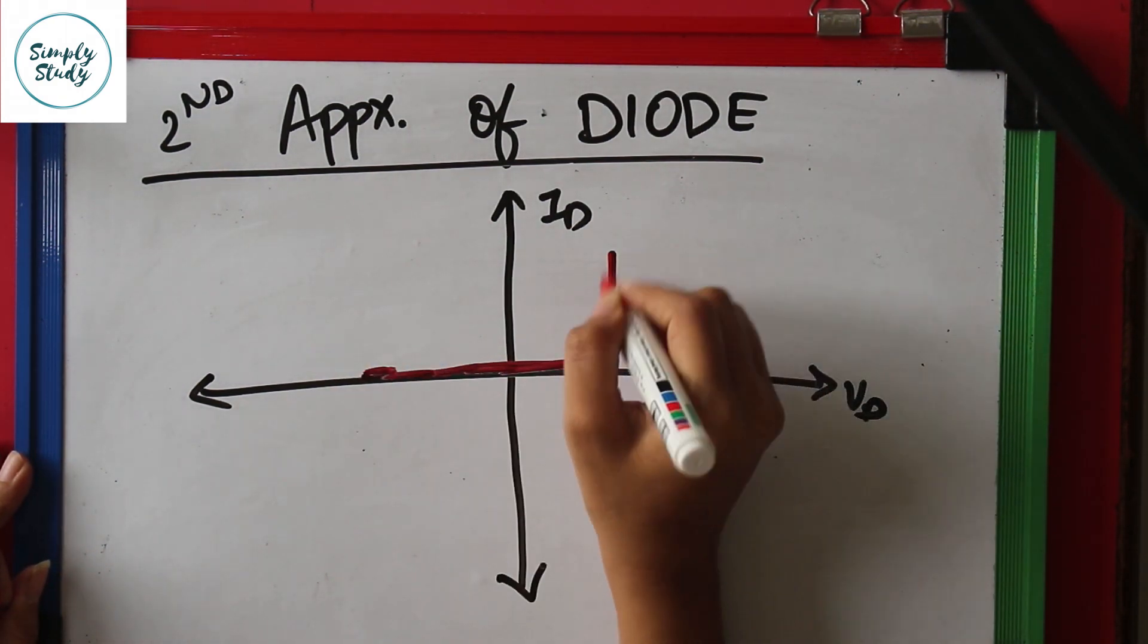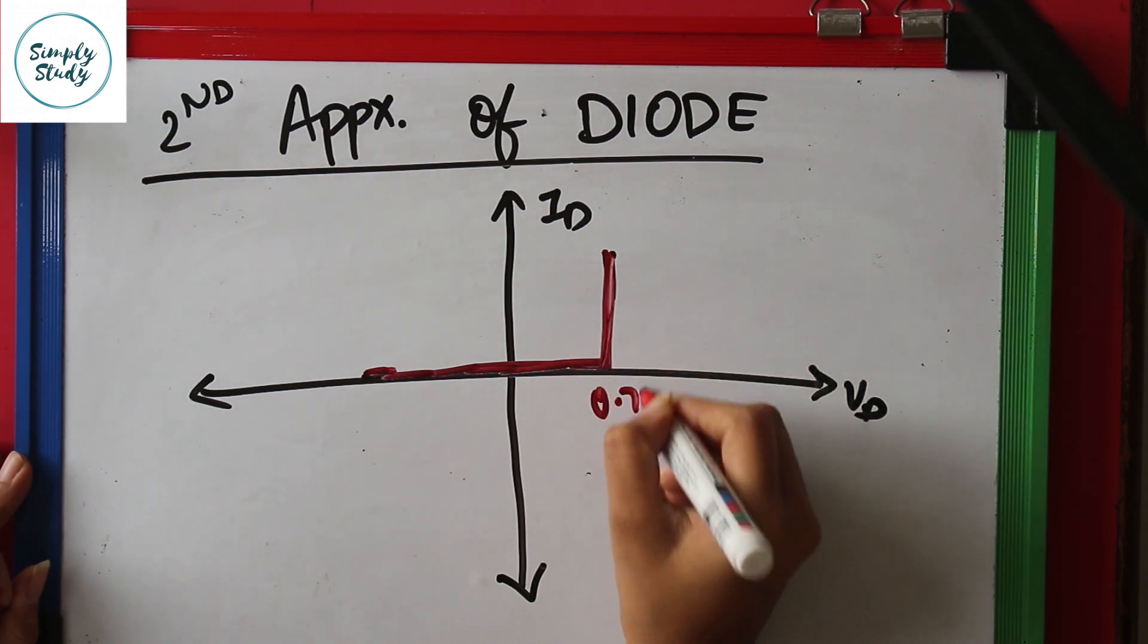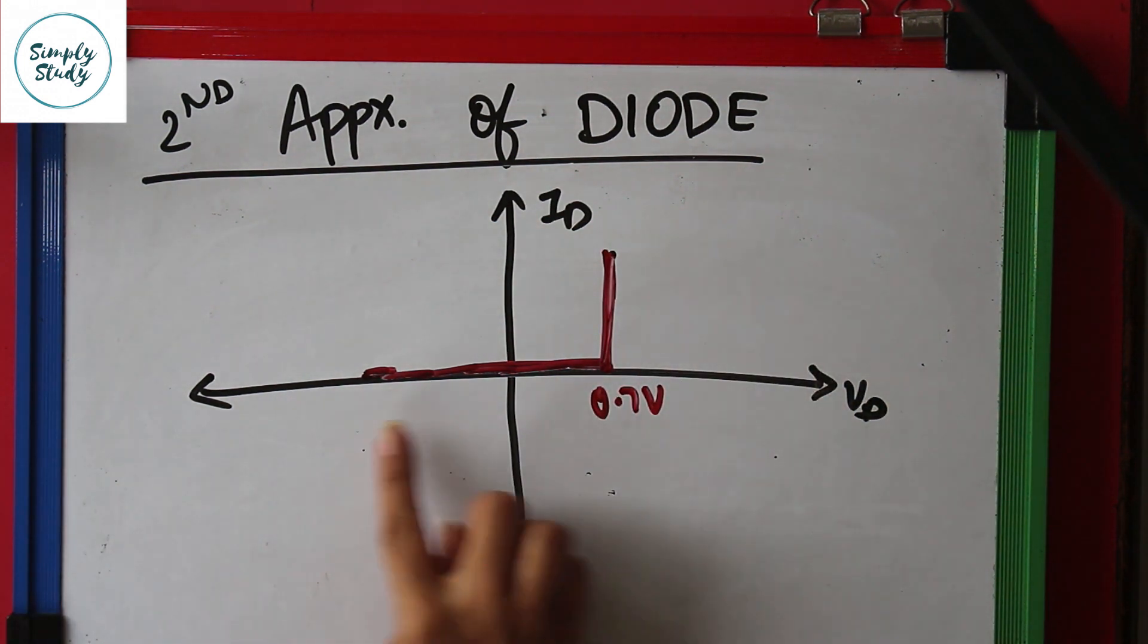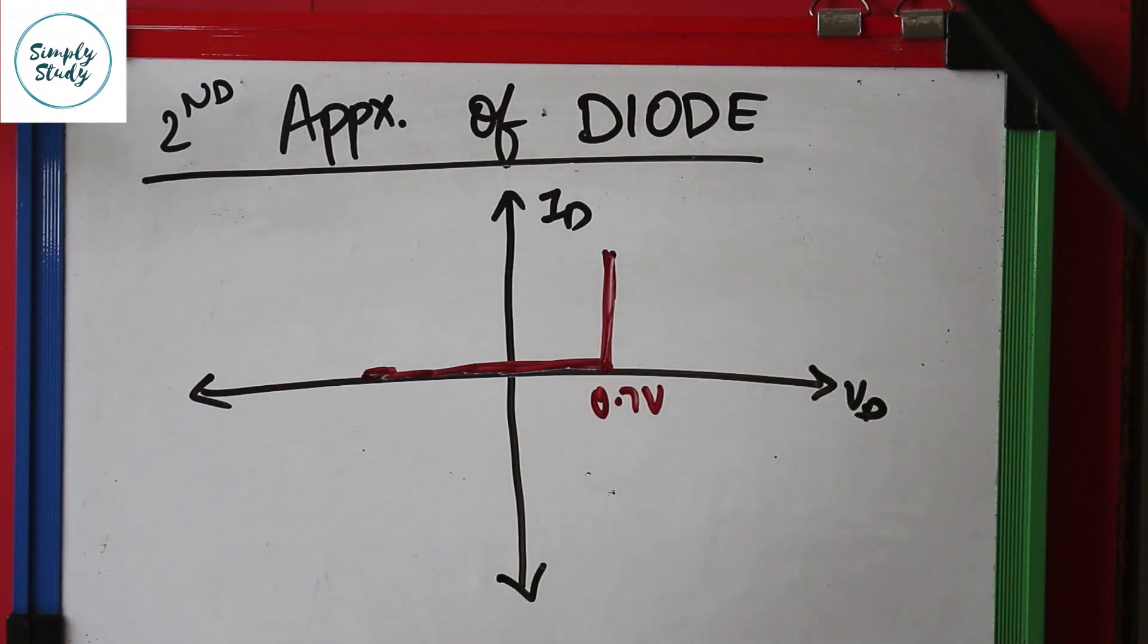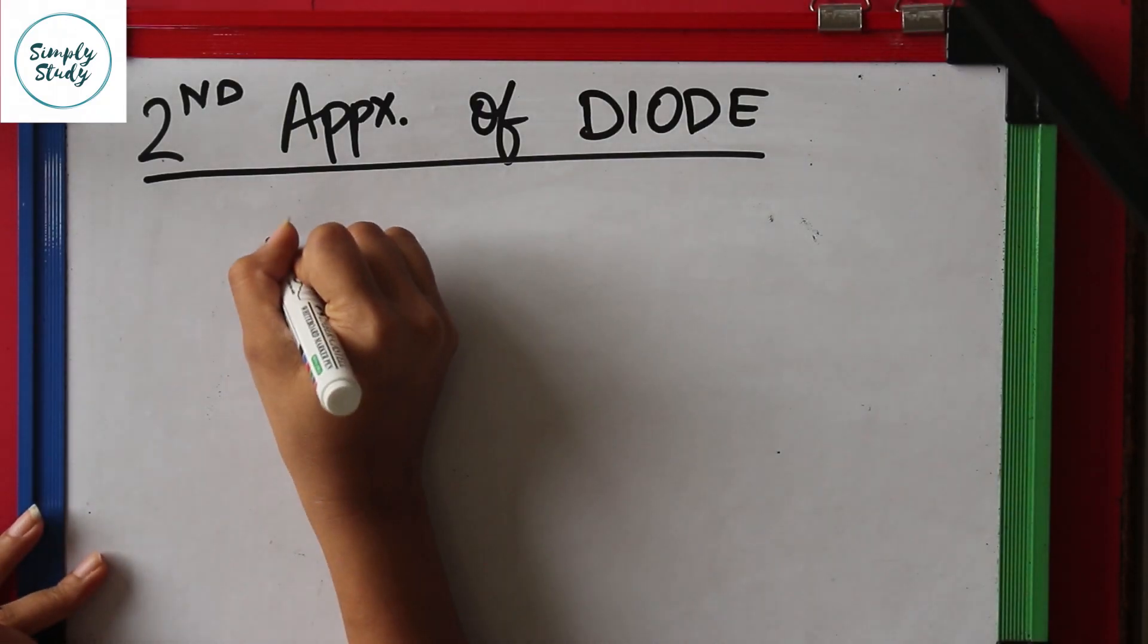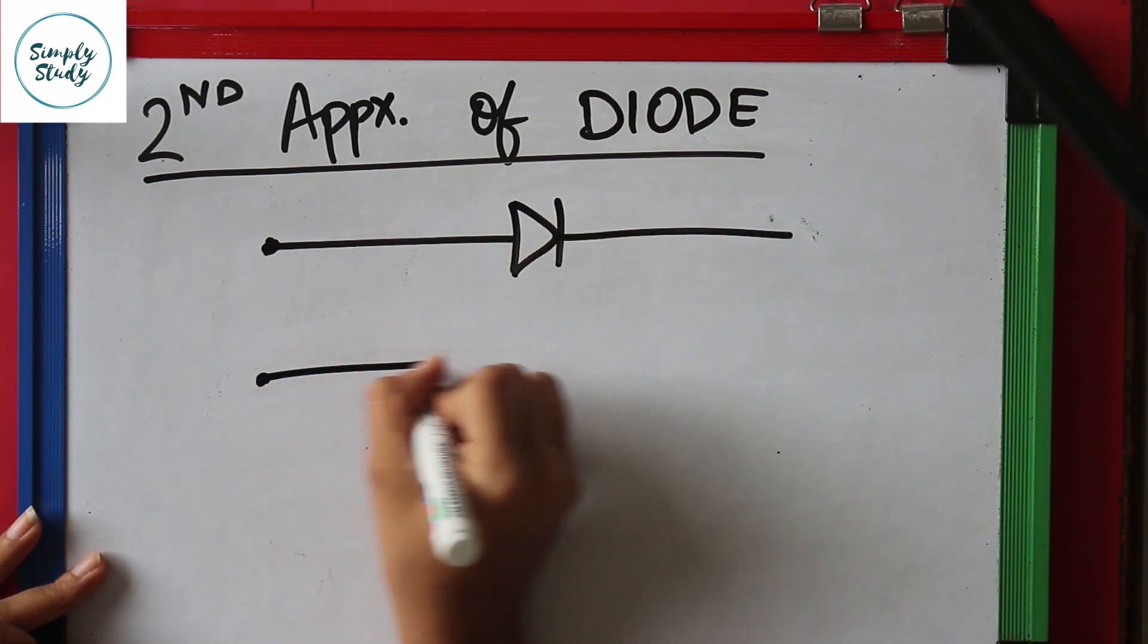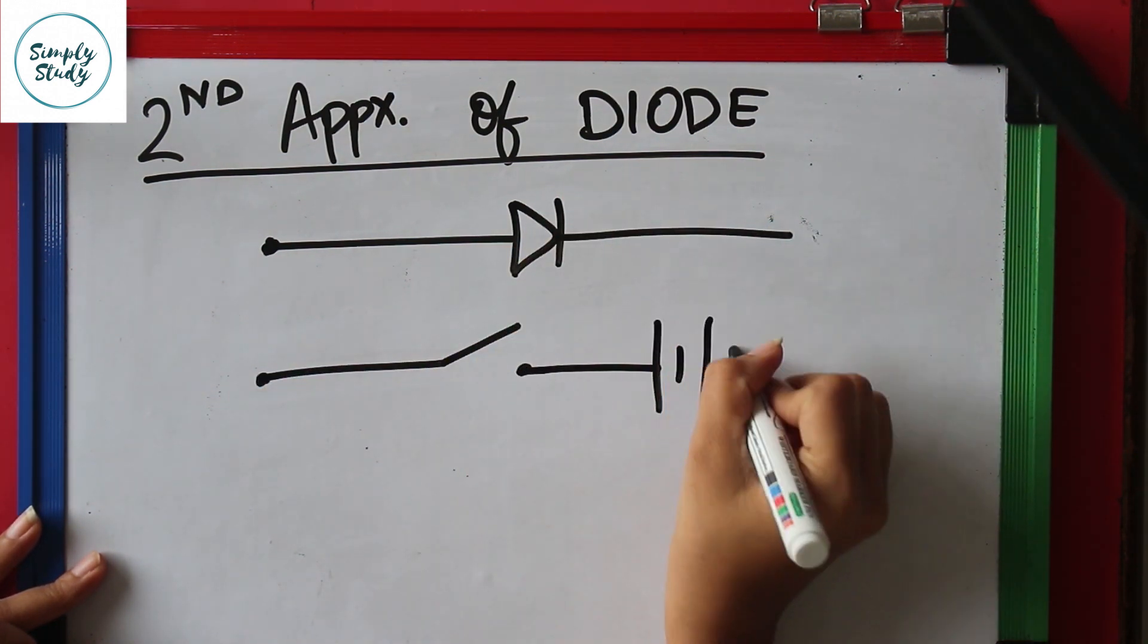Let's see its graph. The graph says that no current exists until 0.7 volts. At this point the diode turns on, and thereafter only 0.7 volts can appear across the diode, no matter what the current is. Hence the diode works as a switch in series with 0.7 volt barrier potential.